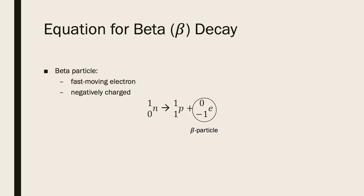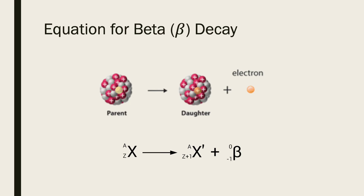Let's move on to beta decay. A beta particle is a fast-moving electron and it is negatively charged. During beta decay, a neutron in an unstable nucleus decomposes into one proton and one electron. The resulting proton remains in the nucleus while the electron is emitted with high kinetic energy as a beta particle. The general equation for beta decay shows a parent nucleus decaying into a daughter nucleus where the proton number is Z plus 1, and it releases a negatively charged electron.